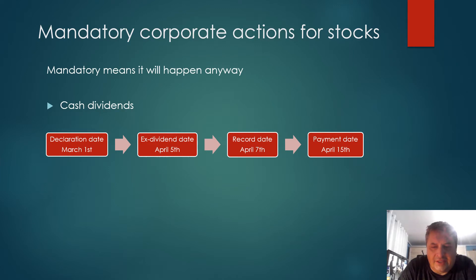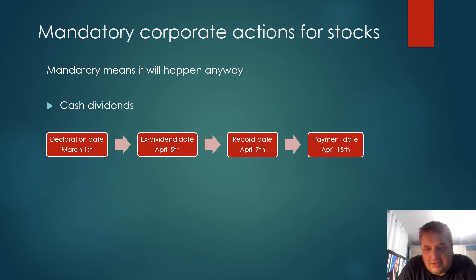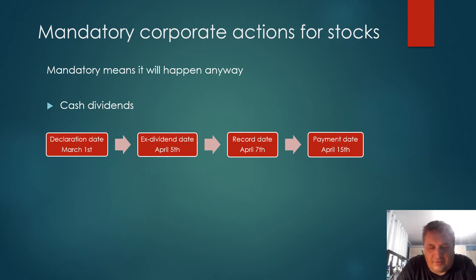Let's talk about mandatory corporate actions for equities. The first is a cash dividend. You cannot say you don't want a cash dividend — it's a mandatory event because it was declared by the board of directors. However, sometimes you have a choice: you can receive the cash dividend or ask to have that dividend reinvested into stocks. Sometimes you get an option to reinvest your dividends.